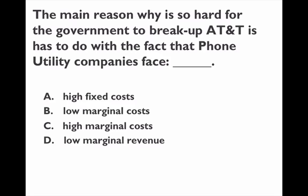The question reads: the main reason why it's so hard for the government to break up AT&T has to do with the fact that a phone utility company usually faces high fixed costs, low marginal costs, high marginal costs, or low marginal revenue. The answer is A, high fixed costs.